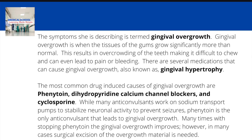The most common drugs that cause gingival overgrowth are phenytoin, dihydropyridine calcium channel blockers, and cyclosporin. While many anticonvulsants work on sodium transport pumps to stabilize neuronal activity to prevent seizures, phenytoin is the only anticonvulsant that leads to gingival overgrowth.